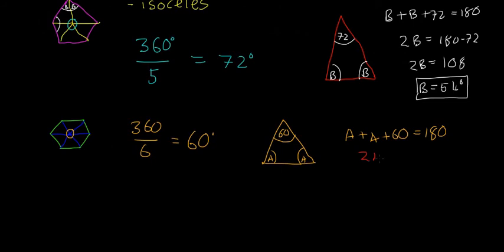So that's going to be 2A is equal to 180 minus 60. 2A is equal to 120, and it turns out that A is equal to 60 degrees. So it's actually an equilateral triangle, these triangles here. You get six perfect equilateral triangles. And then again, this interior angle then is going to be 60 plus 60, so it's going to be 120 degrees.